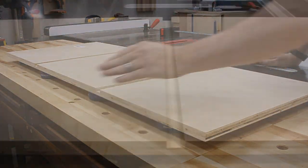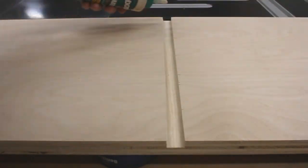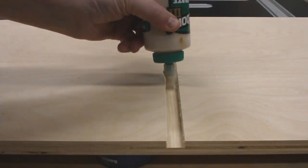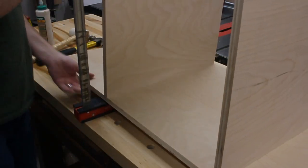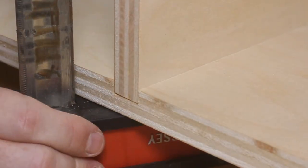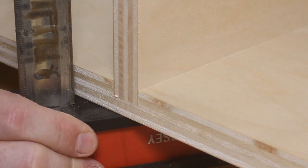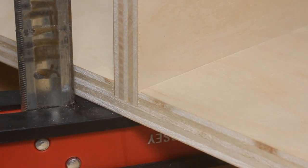When it was glue up time, I ran a thin bead down the edges of the dados and dropped in the dividers. Now the dados were a bit tight, so I used some parallel clamps to help me squish the divider all the way down into the dado until it was fully seated.